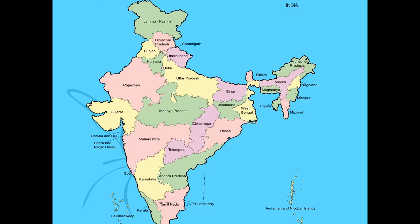Indian Standard Time is GMT plus 5:30. The largest state is Rajasthan and the smallest state is Goa. The largest union territory is Andaman and Nicobar, and the smallest is Lakshadweep. The largest district is Kutch in Gujarat, and the smallest district is Mahe, which is part of Puducherry and situated in Kerala.